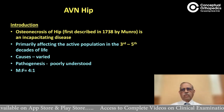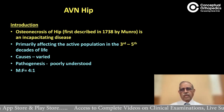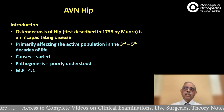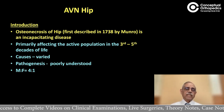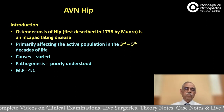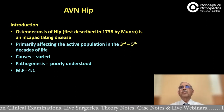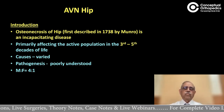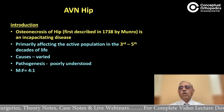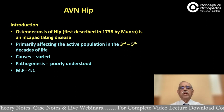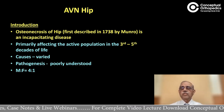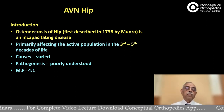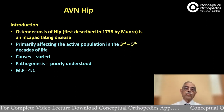Though first published in 1738 by Monroe, osteonecrosis is an incapacitating disease primarily affecting the active population, usually in the third to fifth decade of life. The causes have been found to be varied, and the pathogenesis even today is not very well understood, with a male-to-female ratio of 4 to 1.